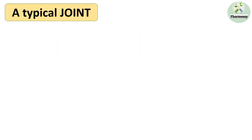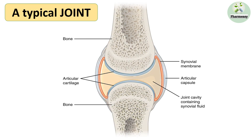This is a figure of a joint. These are the two bones which articulate together and form a joint. It shows the articular cartilage, synovial membrane, articular capsule, and a cavity filled with synovial fluid, which is a viscous fluid that reduces friction between cartilages.